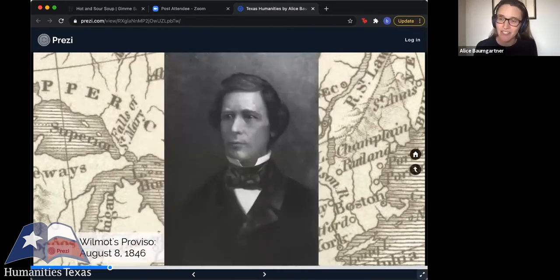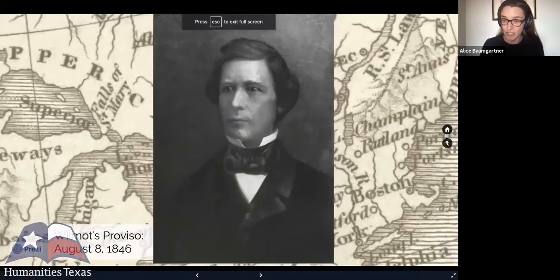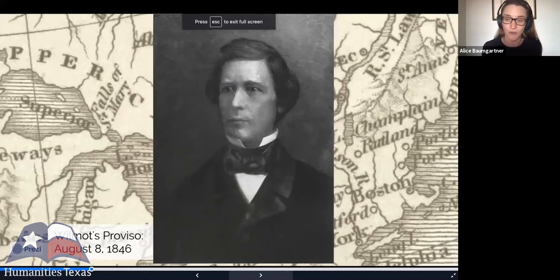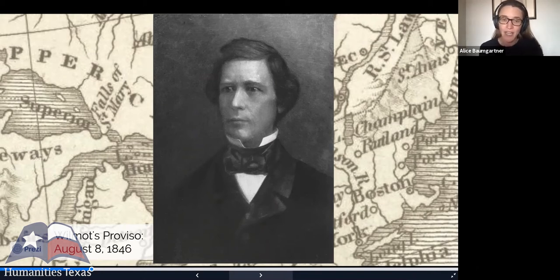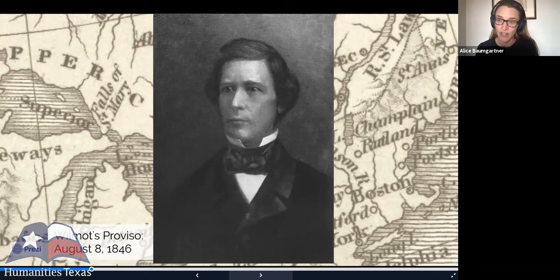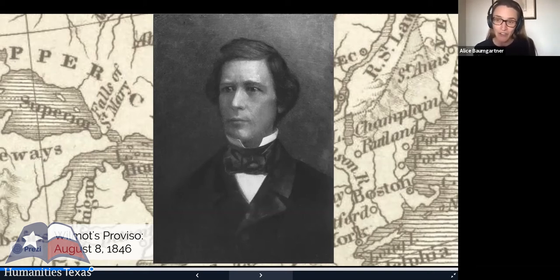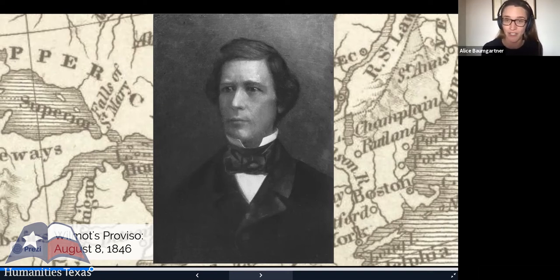The question of the status of slavery in whatever territories would be conquered came onto the floor of the Senate on August 8th, 1846, when a freshman representative from Pennsylvania named David Wilmot proposed an amendment to an appropriation bill to fund the war that would prohibit slavery in all of the territories conquered as a result of that war. Historians have argued that this is the event in U.S. history that leads almost inevitably to sectional controversy and civil war.